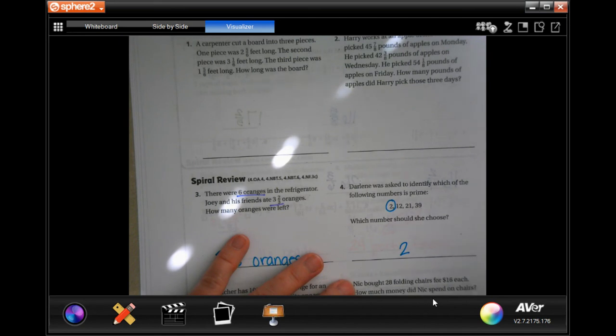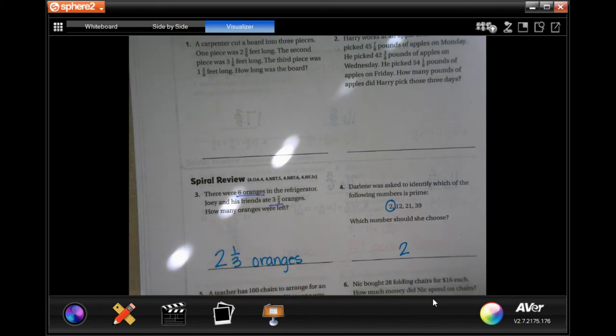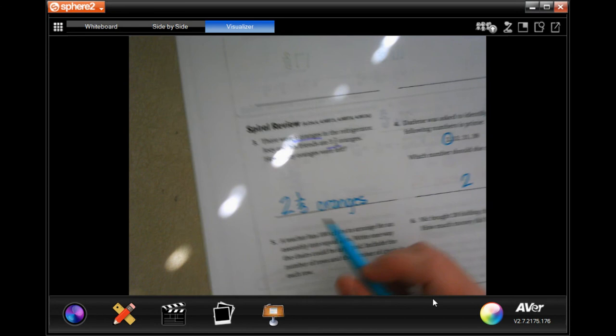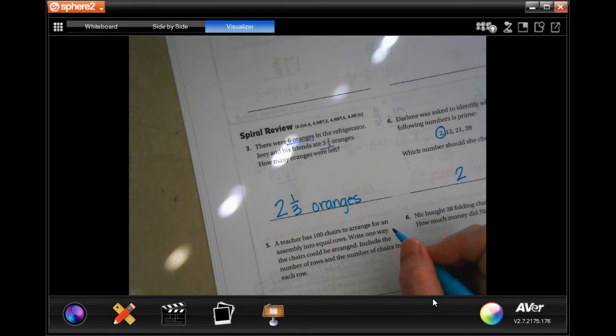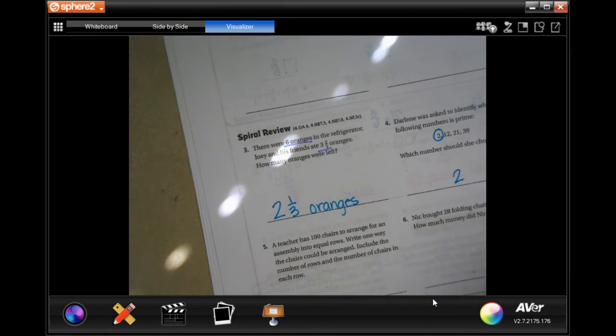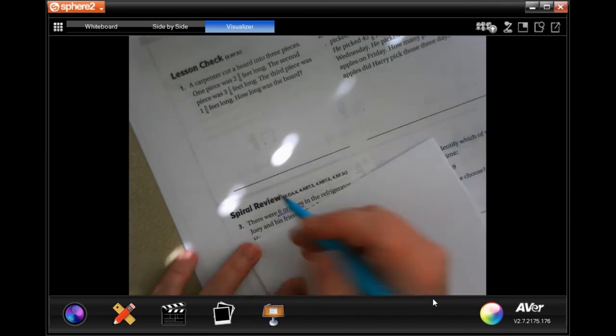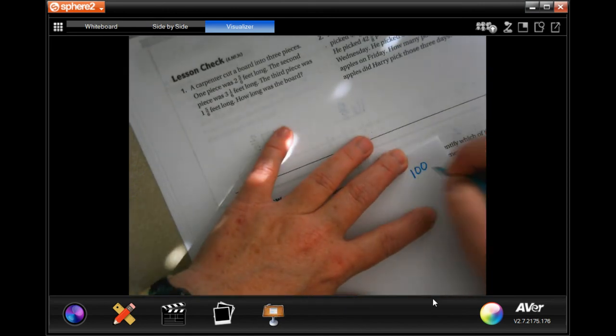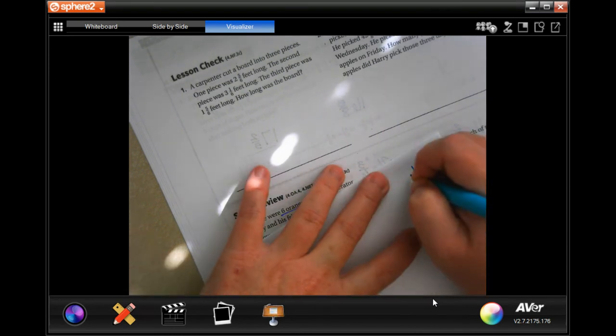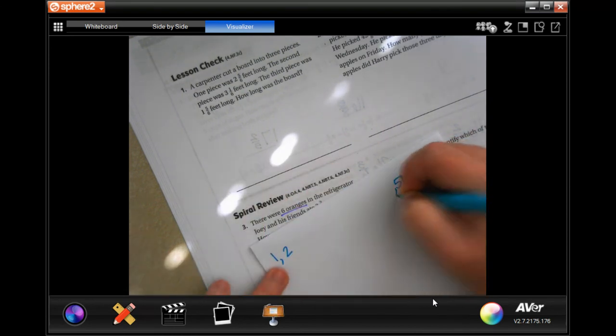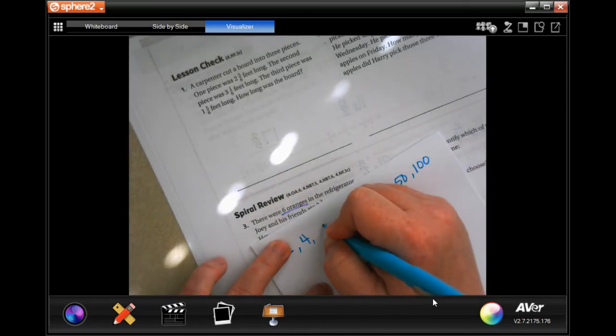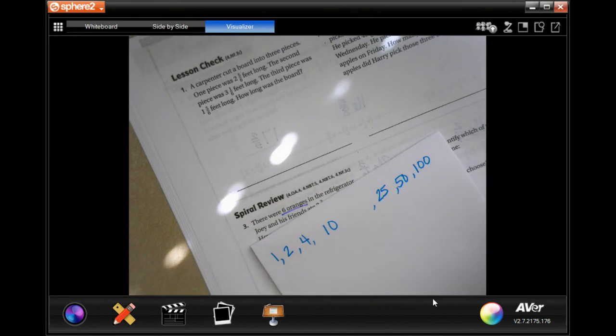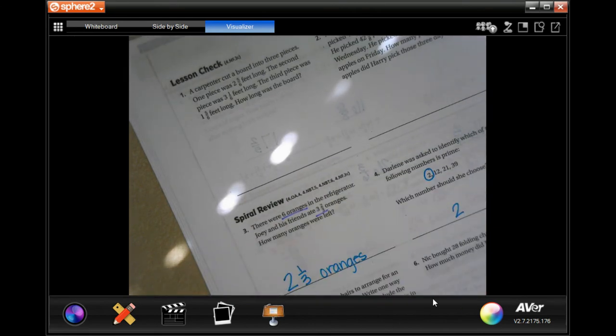A teacher has 100 chairs to arrange for an assembly in equal rows. Write one way the chairs can be arranged. So how do we make a hundred? We could make 1 times 100, 2 times 50, no 3, but 4 times 25, or 10 times 10.